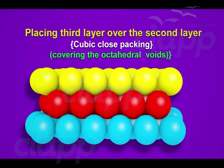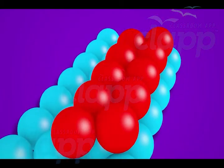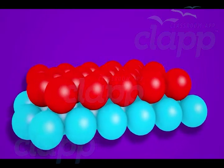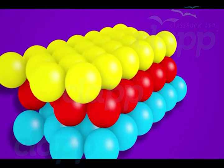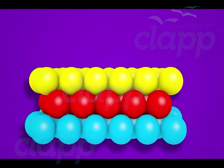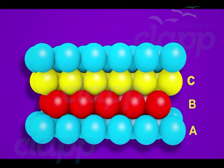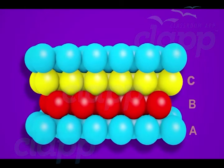The second possibility when placing a third layer over the second layer is covering the octahedral voids. With the first layer as A type and second layer as B type, place a third layer above the second layer such that its spheres cover the octahedral voids. When placed this way, the spheres of the third layer are not aligned with those of either the first or second layer, so the third layer is named C type. Only when the fourth layer is placed do its spheres align with those of the first layer, so the fourth layer is also named A type.